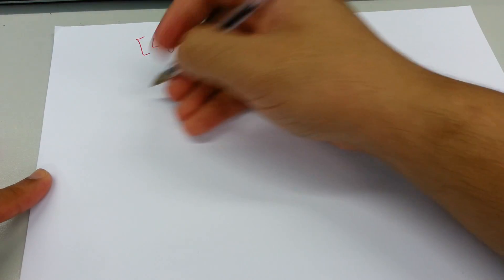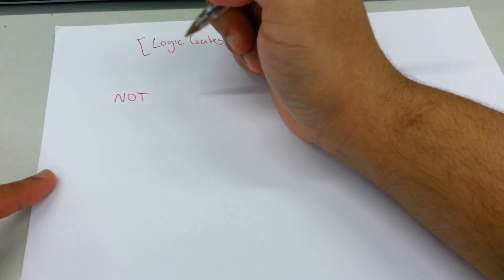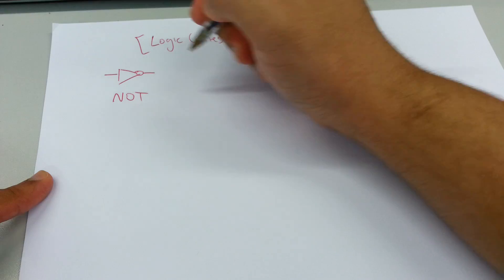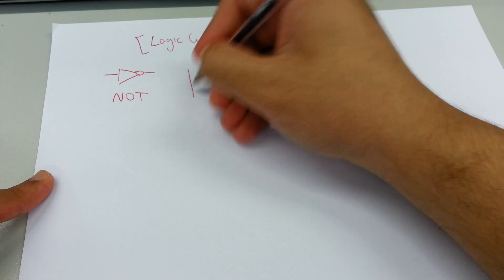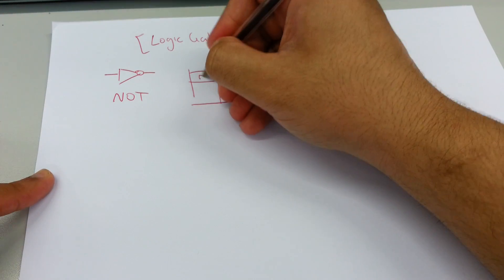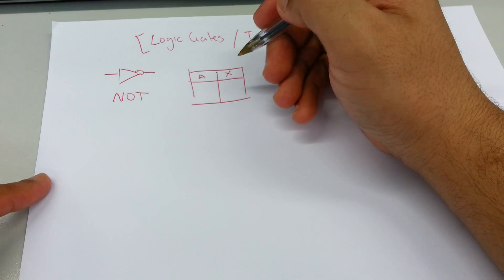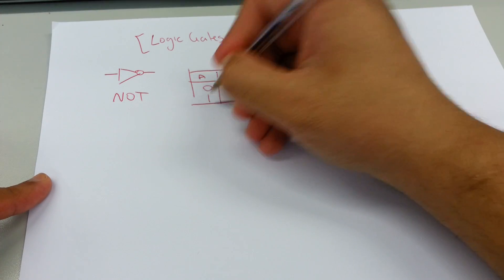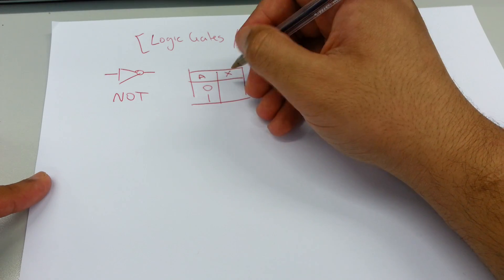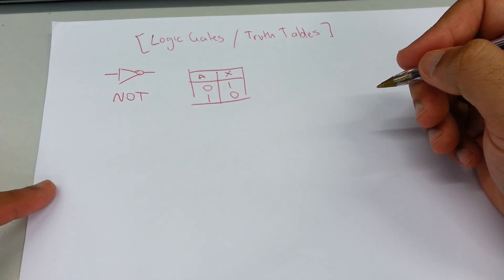Okay, so NOT — the sign for NOT is a line, triangle, circle, then it ends. So the input, I would say X, is the input and there's only one output. Zero becomes one and then it just swaps because it's NOT, so one becomes zero.